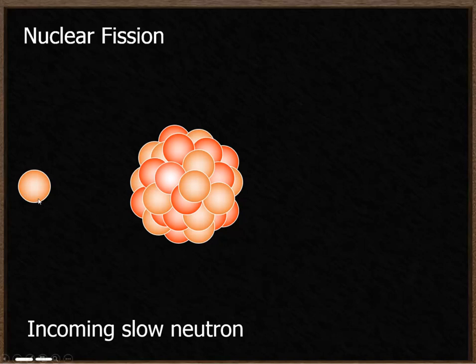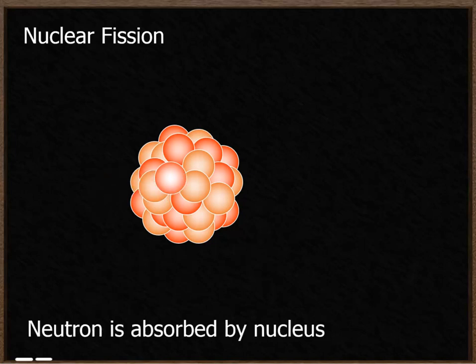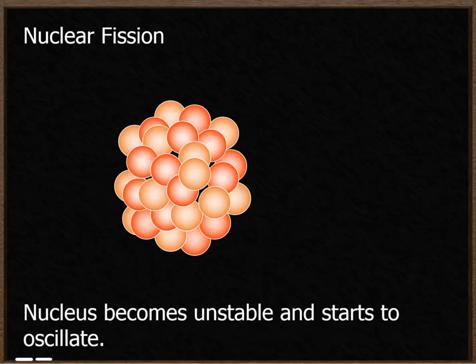Towards that uranium you release a neutron and that neutron travels quite slowly towards the uranium. The reason why it's traveling slowly is so that it can be absorbed into the nucleus of the uranium. At that point the nucleus becomes very unstable and it starts to oscillate.